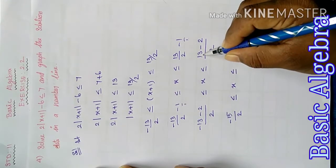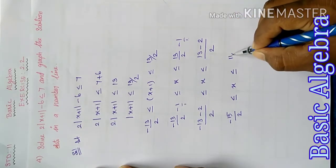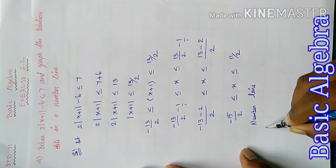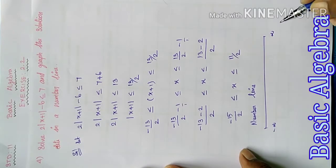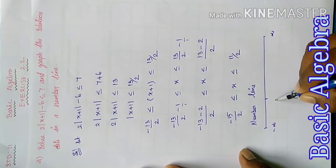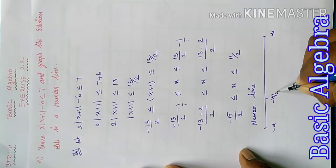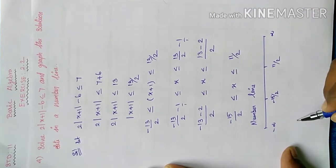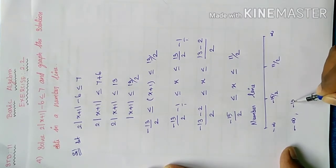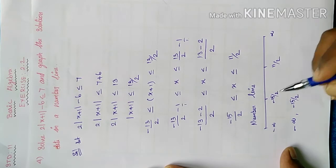Drawing the number line: from minus infinity to plus infinity. Mark the endpoints at minus 15 by 2 and 11 by 2. The solution is from minus 15 by 2 to 11 by 2, including the endpoints.